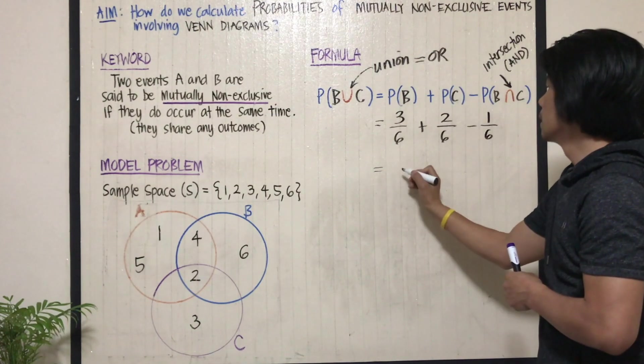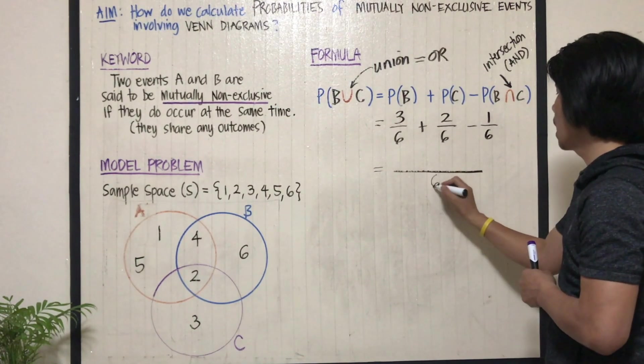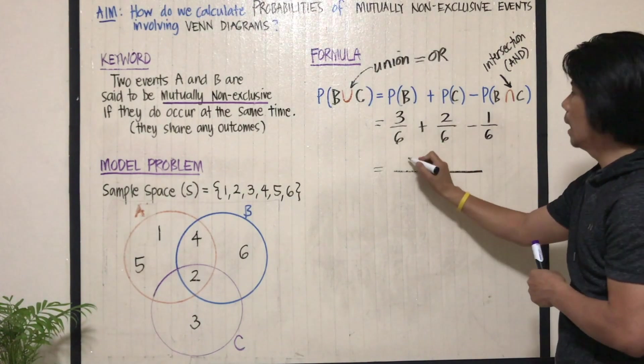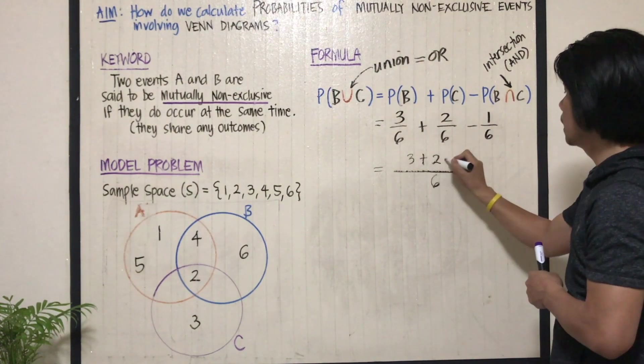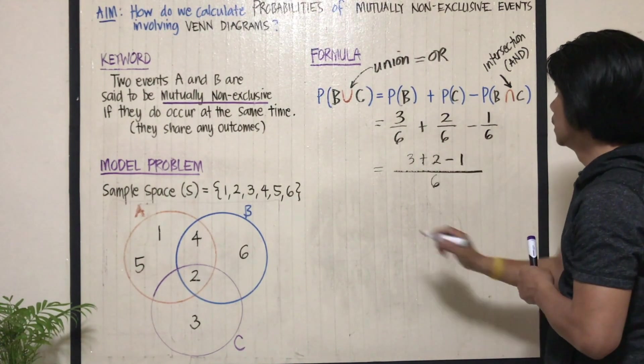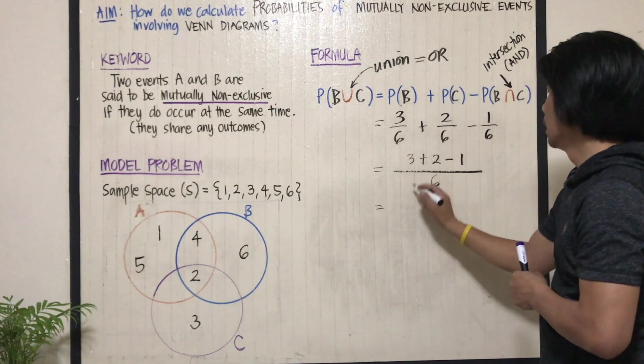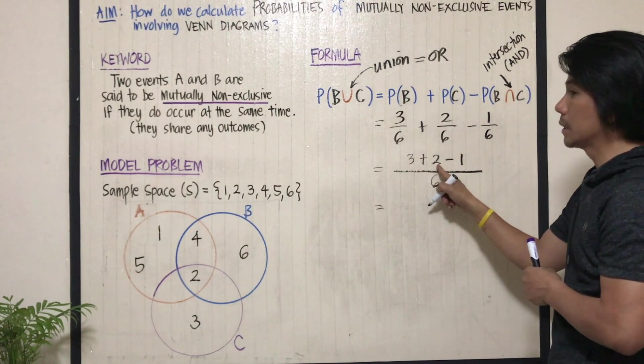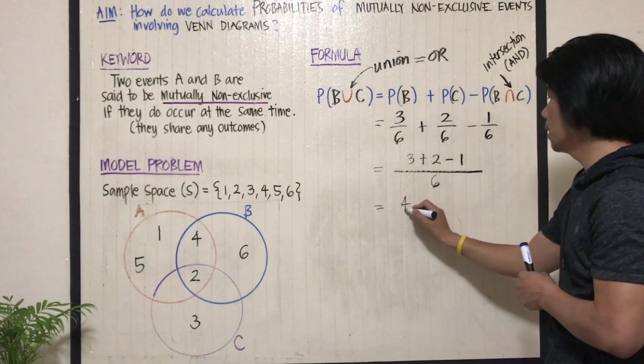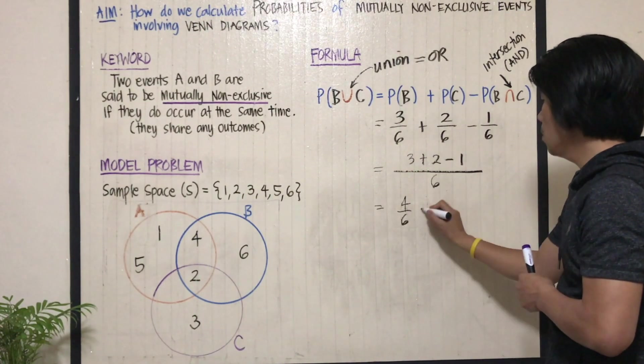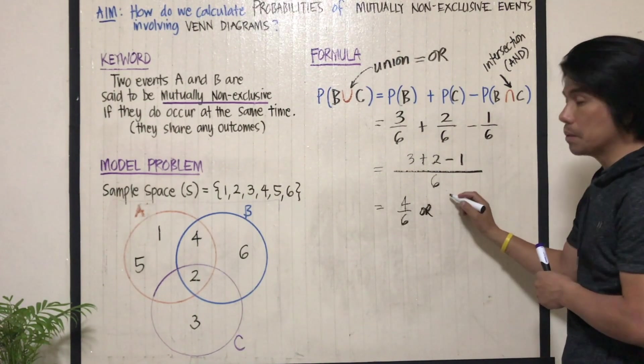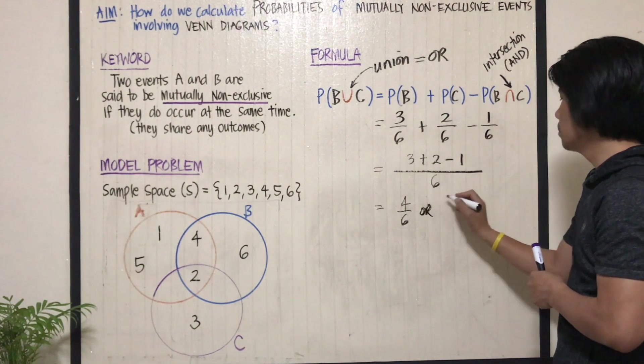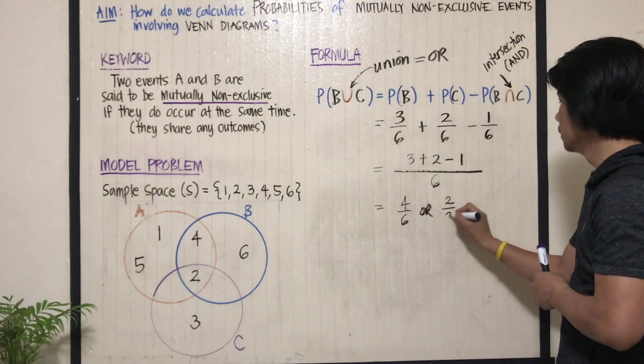Again, since they have the same denominator, we just simply copy it, add three plus two minus one, and that is three plus two, that's five minus one, that's four out of six. Or, if you want to reduce it, then divide it by two. That is two out of three.